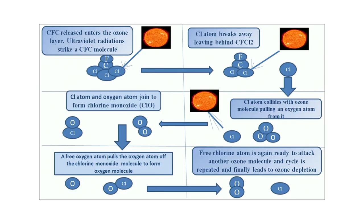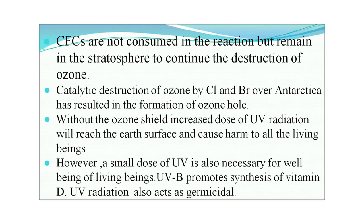Let us look at the process of CFC-driven ozone depletion. Ultraviolet radiations from the sun reach our atmosphere and strike the CFC molecule, breaking away and freeing a chlorine atom. This chlorine atom collides with an ozone molecule, pulling an oxygen atom from it. The chlorine atom and oxygen atom join to form chlorine monoxide. A free oxygen atom then pulls the oxygen atom from the chlorine monoxide molecule to form an oxygen molecule, and the free chlorine atom is again ready to attack another ozone molecule — the cycle is repeated. CFCs are not consumed in the reaction but remain in the stratosphere to continue the destruction of ozone.